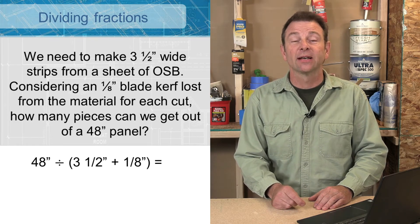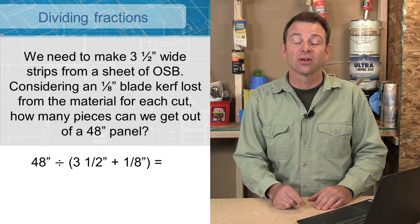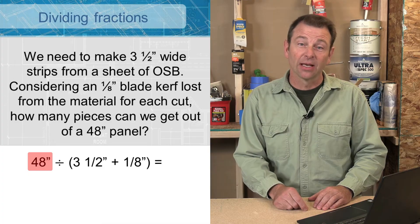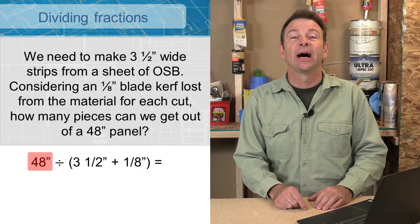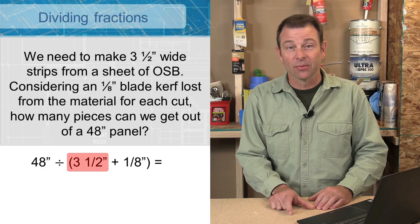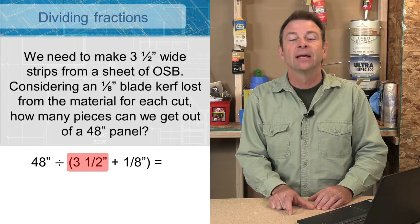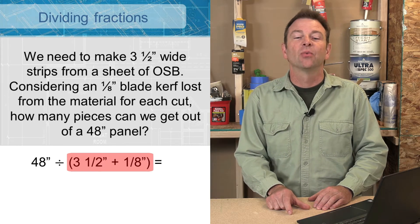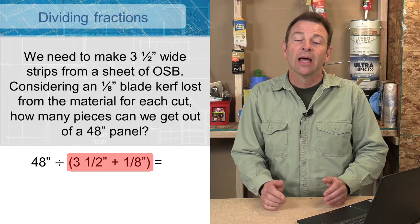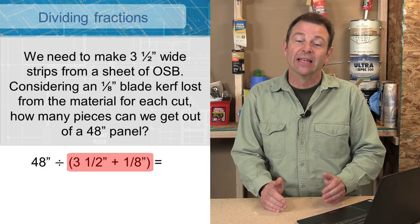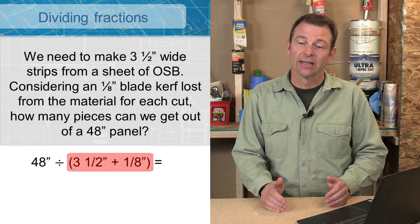The way we're going to set this up is we're going to start with our 48 inch panel and divide it by our three and a half inch strip that we're trying to make. But we need to add to that our eighth inch blade kerf. So we need to add the three and a half to the eighth inch, and then divide that into 48.